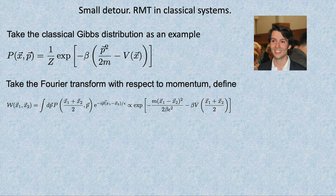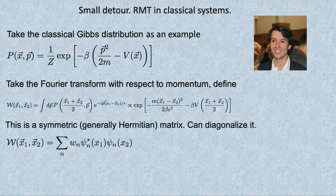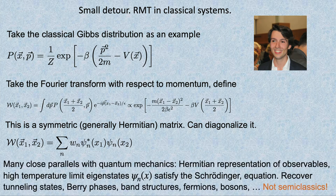If you stare a little bit, this function is symmetric — or more precisely, Hermitian — because if I exchange x1 and x2, it's like doing a complex conjugate. If it's Hermitian and I treat x1 and x2 as discrete coordinates, I can diagonalize it, and then I can write it as a combination of eigenstates of this matrix with some eigenvalues W_N. Then I ask: what are the properties of these eigenstates and eigenvalues?